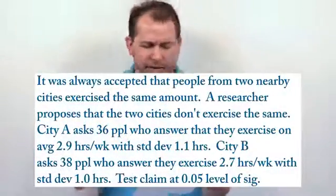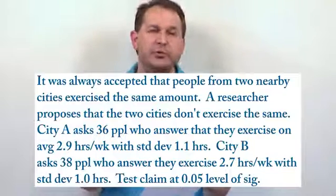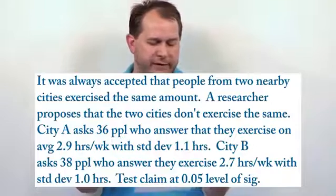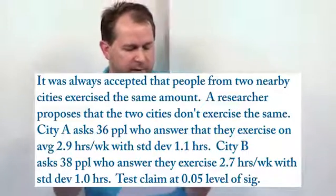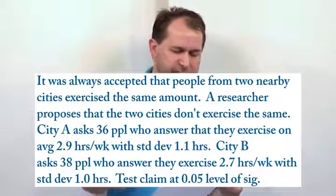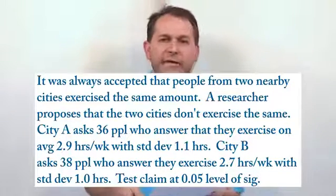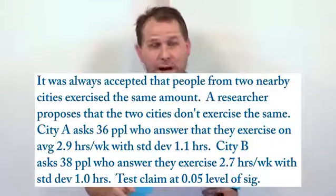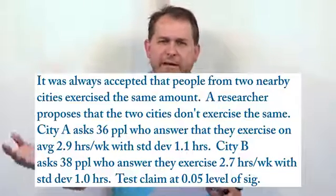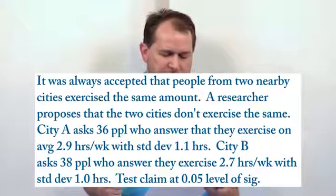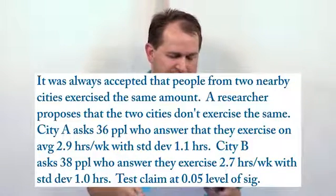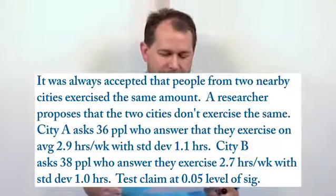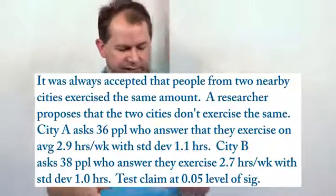So this problem says it was always accepted that people from two nearby cities exercised the same amount. A researcher proposes that the two cities don't exercise the same amount. City A is surveyed with 36 people who answer that they exercise on average 2.9 hours per week with a standard deviation of 1.1 hours. City B is also sampled with 38 people who answer that they exercise 2.7 hours per week with a standard deviation of 1.0 hours. Test the hypothesis to a 0.05 level of significance.